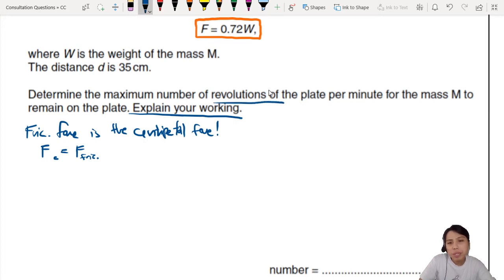Frictional force allows this object to move in a circular path. So Fc equals F. Centripetal force, what's the expression for it? We want revolutions per minute, so maybe we want something that has an omega in it. I will use Mr omega squared.